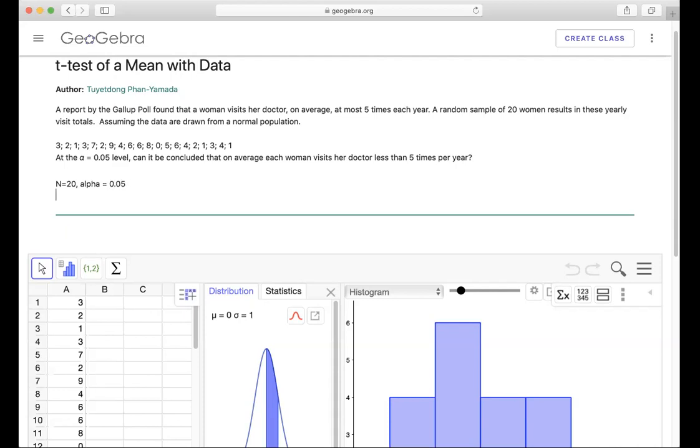They want you to test that on average each woman visits her doctor less than five times per year. That means the population mean. Therefore, your original claim would be mu less than five.